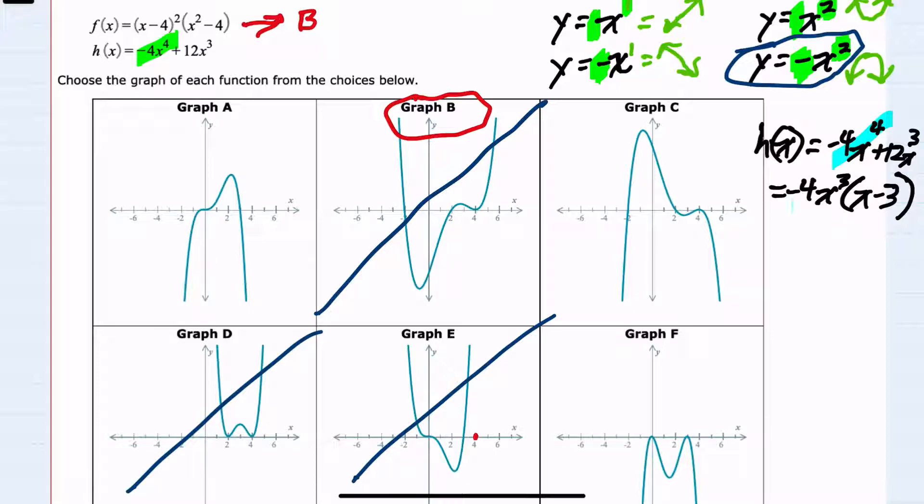Now looking at zeros, if x to the third is zero, then my zero happens at zero and has a multiplicity of 3. So since the multiplicity is odd, I know it goes through the x-intercept of zero, which happens in A. It is going through. It is not happening at C, so I can eliminate that. And while F does have a zero here, it is not going through. It is just touching, which would indicate a multiplicity that is even. So it's not going to be F either.